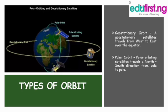There are different types of orbits based on different criteria of classification. An orbit is a path that a satellite follows. In this class we discuss two types: the geostationary orbit, where a geostationary satellite travels from west to east over the equator, and the polar orbit, where polar orbiting satellites travel in a north-to-south direction from pole to pole.